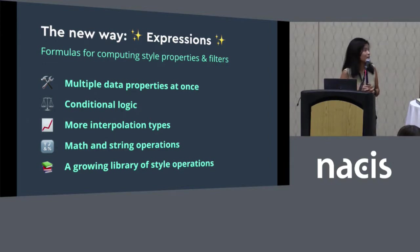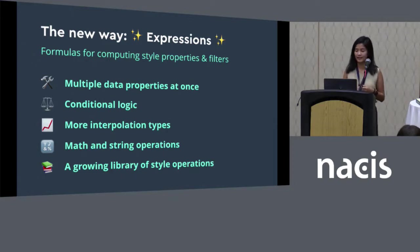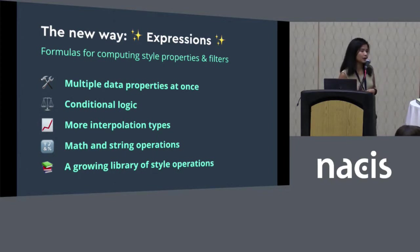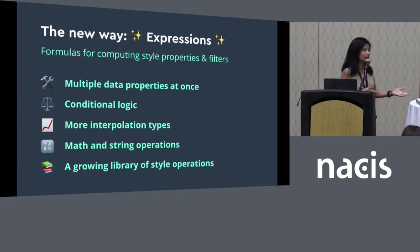We have more interpolation types — for example, you can use a cubic bezier curve to set a zoom-based expression. We also have math and string operations. You might want to use a math operation if you want to do a unit conversion.